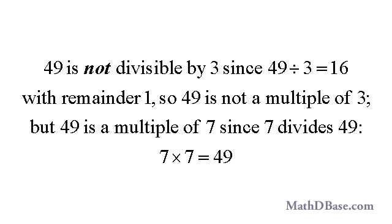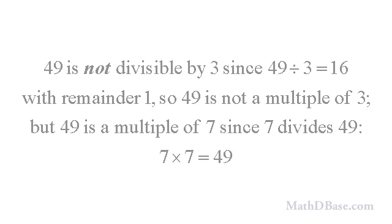49 is not divisible by 3, since 49 divided by 3 equals 16, with a remainder of 1. However, 49 is divisible by 7, so it is a multiple of 7.